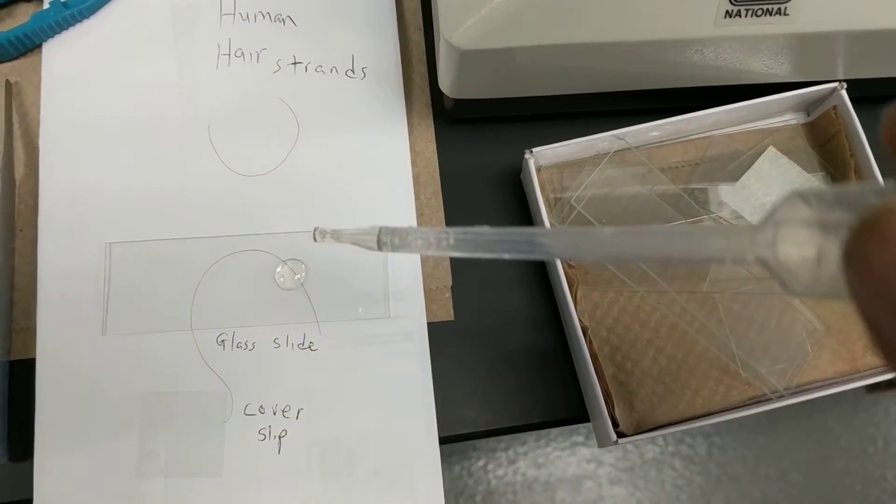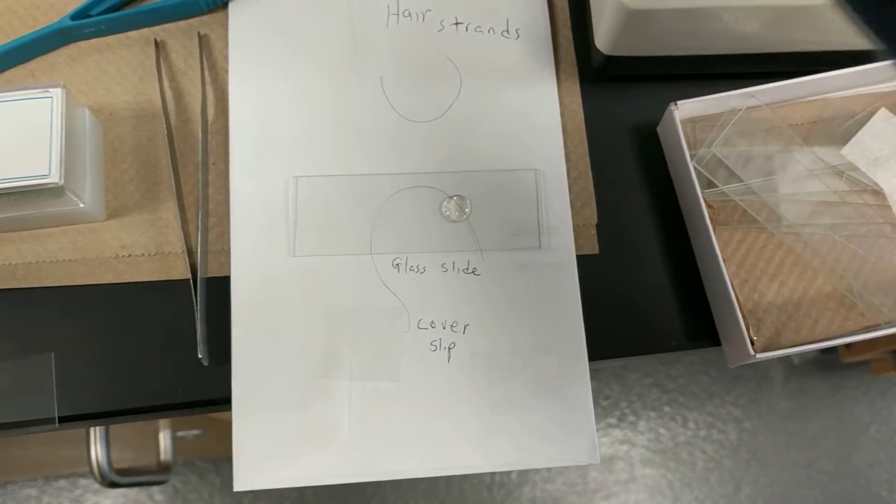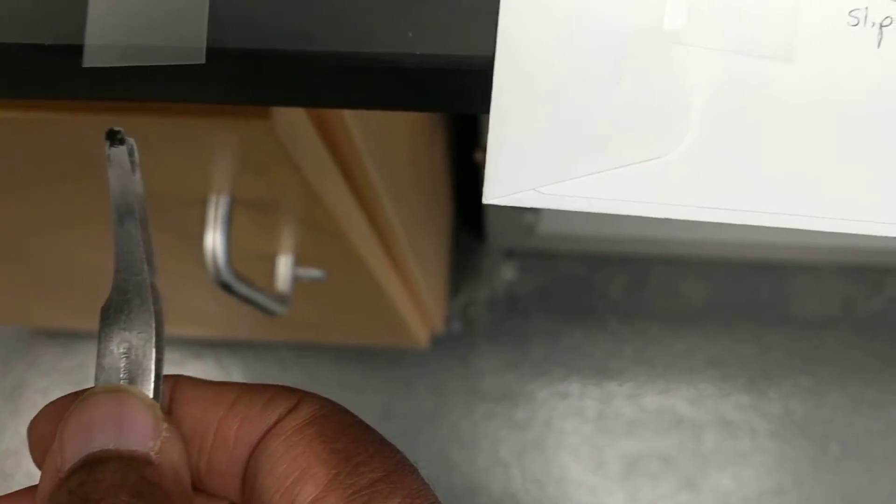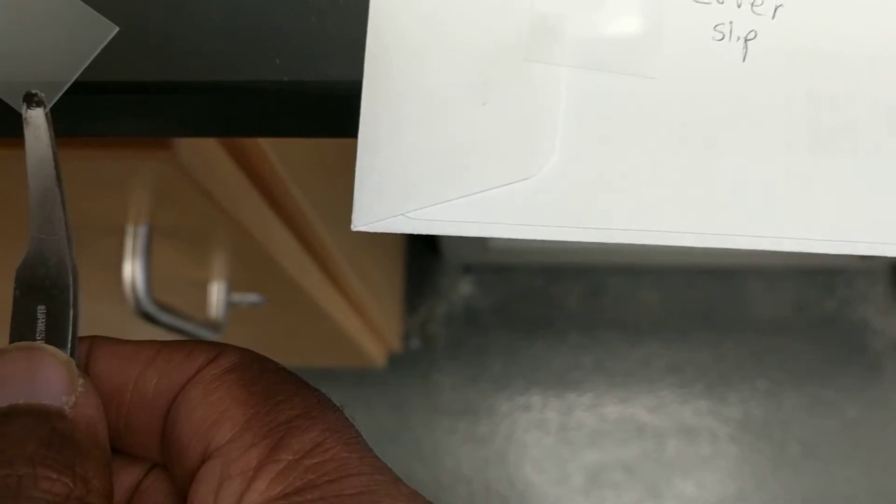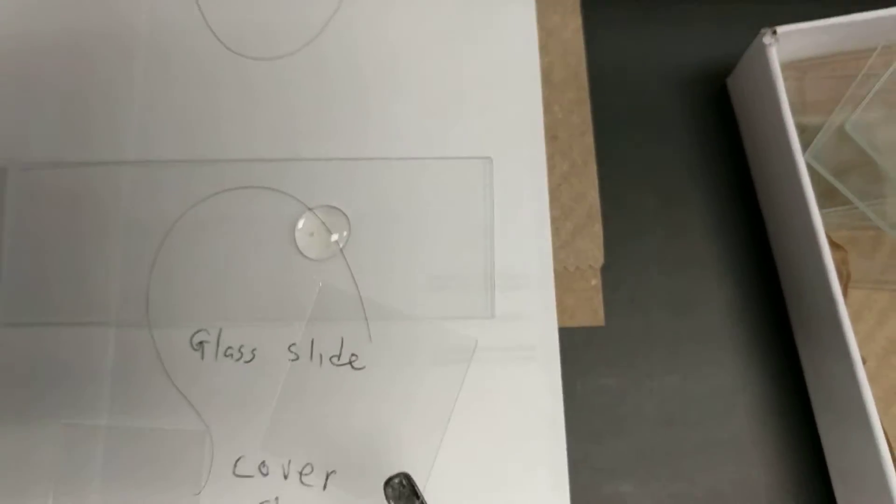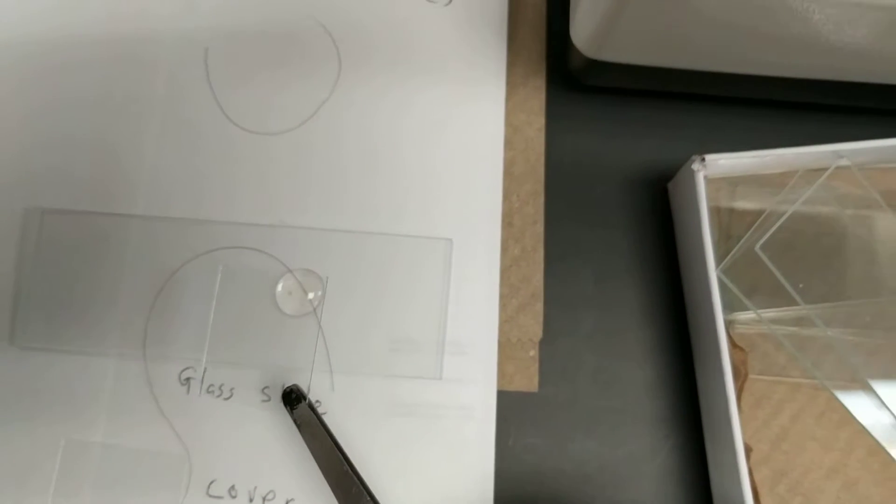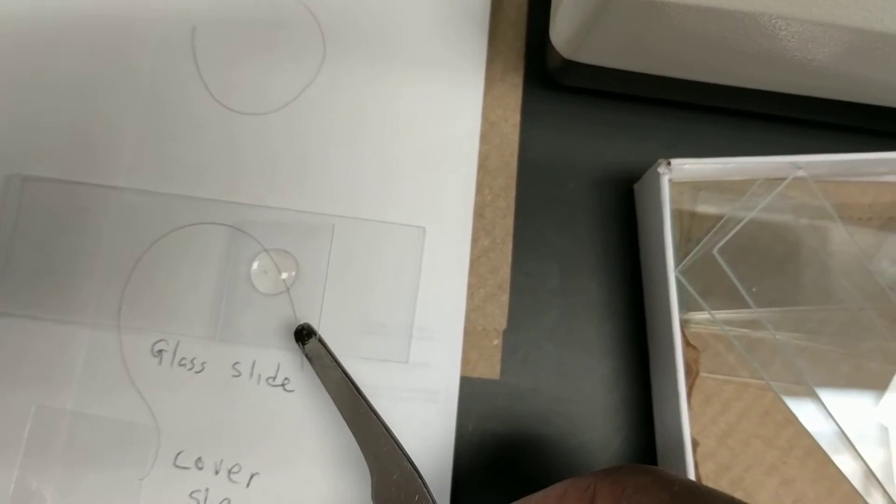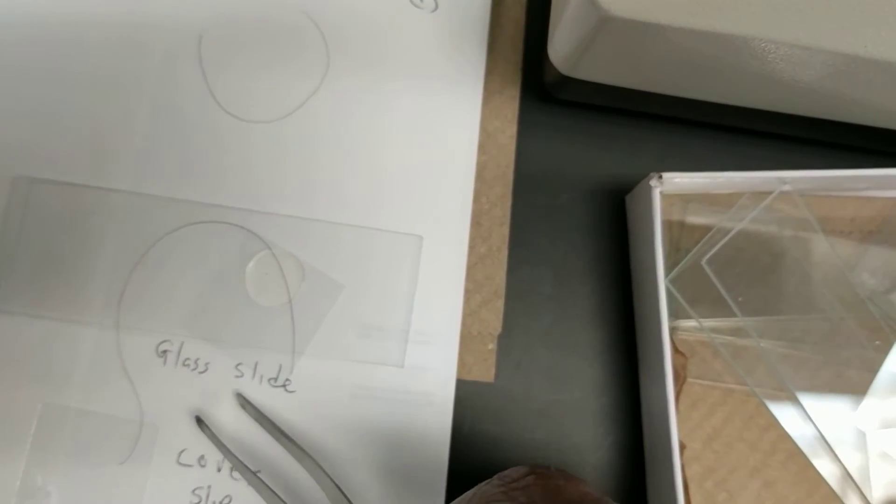You want to prevent the formation of air bubbles. And then take your tweezer and get your cover slip. And you want to place it over the sample with the hair and oil drop, at an angle of 45 degrees. And you drop it over.